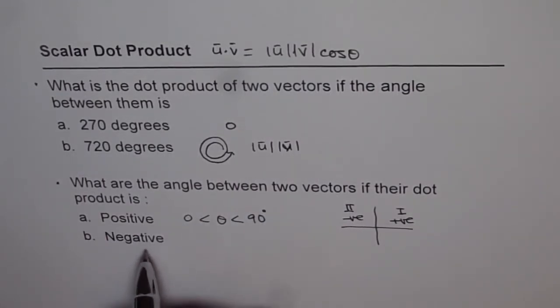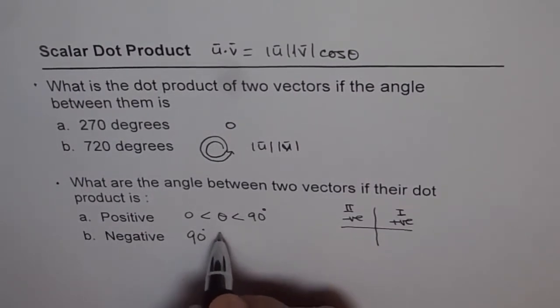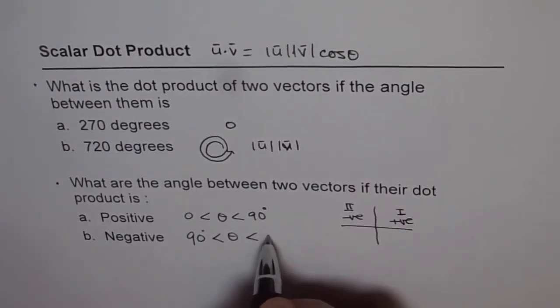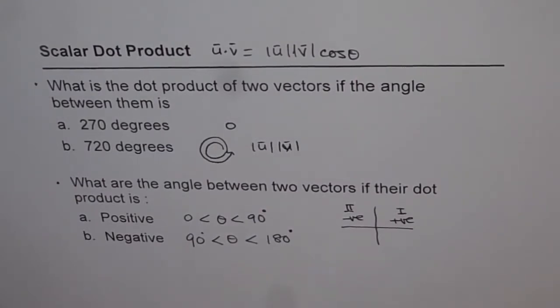But if it is negative, it means that θ is greater than 90 degrees but is less than 180 degrees. So that is the angle between the vectors u and v.